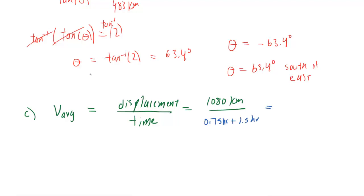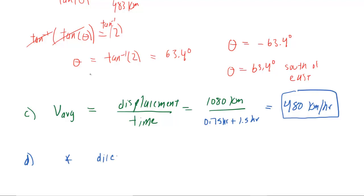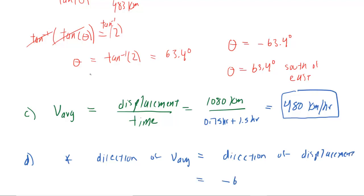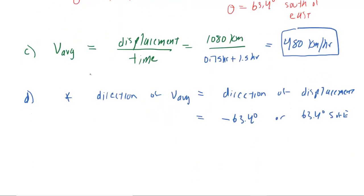Working that out gives about 480 kilometers per hour, which is the correct answer to part C — the magnitude of the average velocity. Part D wants the direction of the average velocity, and here's a key concept: the direction of the average velocity is the same as the direction of the displacement. We already found that to be negative 63.4 degrees, or 63.4 degrees south of east.